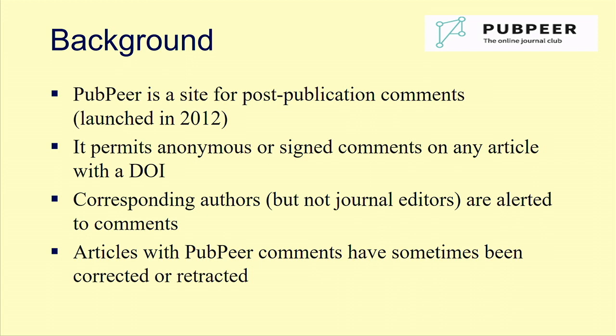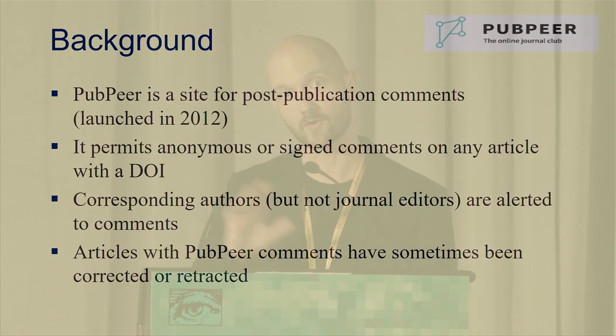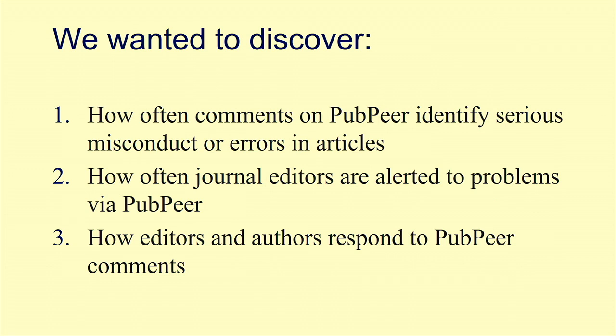If you are familiar with PubPeer, you may have read about it from Retraction Watch or some other source, because it has been used to correct the literature — some articles have been retracted because of comments posted there. Recently, developers of StatCheck posted corrections for more than 50,000 articles in psychology journals where they found inconsistencies in p-values. So it is a platform that allows cross-field commenting.